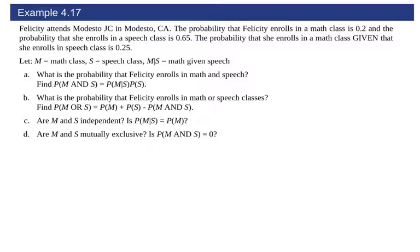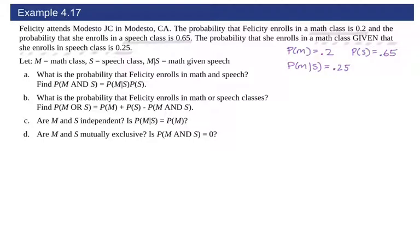Let's try these in action. You could go ahead and pause to give it a go, but let me first write this down. I like to identify everything we have. The probability that we have a math class is 0.2, the probability that we have a speech class is 0.65, and then our conditional — math given speech — is 0.25.